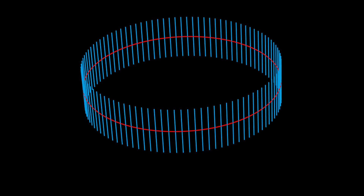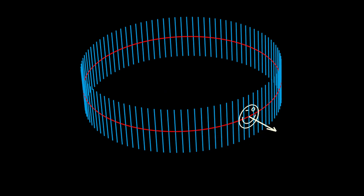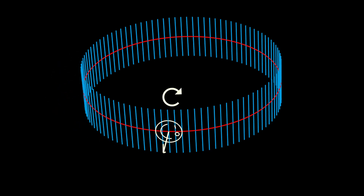To demonstrate that the cylinder is orientable, I recruited Moby, who lives inside the surface except for their nose which is always normal to the surface. In every possible trip Moby takes on the cylinder's surface, their clockwise rotation is maintained. At the beginning of their trip, Moby's nose points away from the red circle center, their open eye is on our right, and they are rotating clockwise. When Moby returns home, they are still rotating in a clockwise direction, their open eye is still on our right, and their nose is still pointing away from the red circle center.